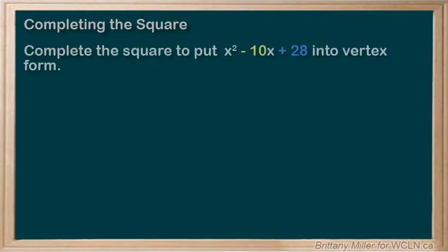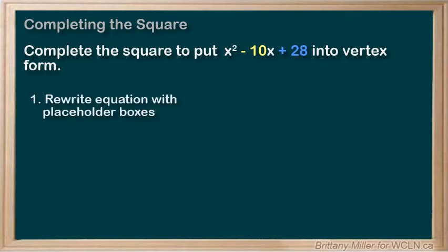Let's do another example with less lecturing and just the steps. Complete the square to put x squared minus 10x plus 28 into vertex form. Step 1. I like to write the equation with some empty boxes to leave room for what I'm going to add and then take away.